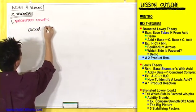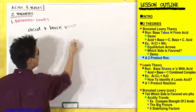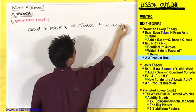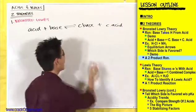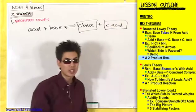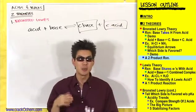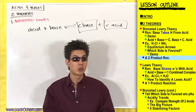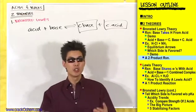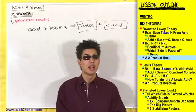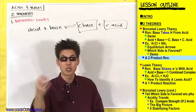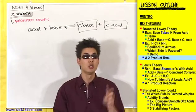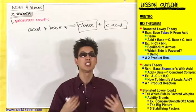In a Brønsted-Lowry acid-base reaction, you take an acid, add it to a base, and what products do you get? You get a conjugate base and a conjugate acid — a two-product reaction. In a Lewis acid-base reaction, you're going to get a one-product reaction. If anyone asks you to identify whether a reaction is Brønsted-Lowry or Lewis, you can determine this by looking at the number of products: Brønsted-Lowry gives two products, Lewis gives only one.